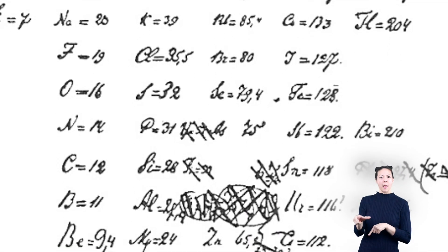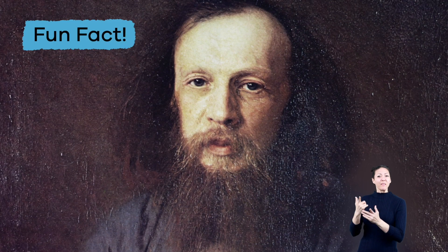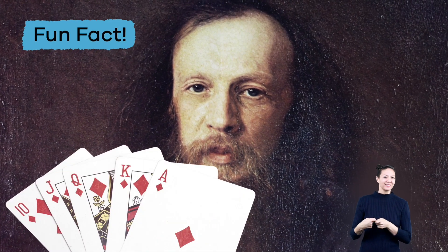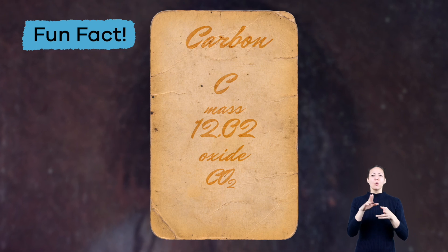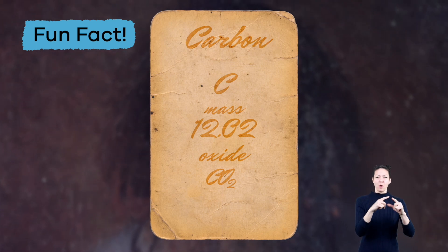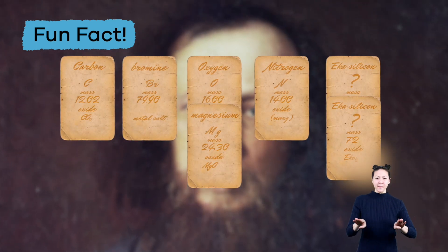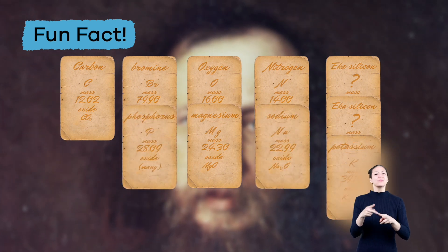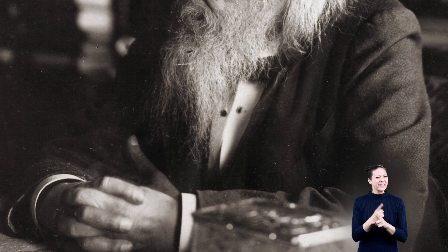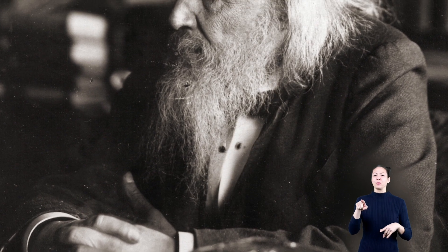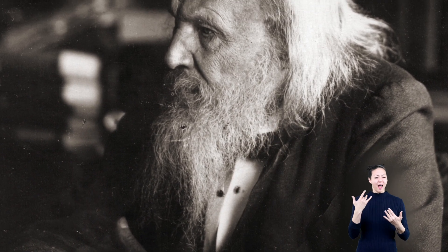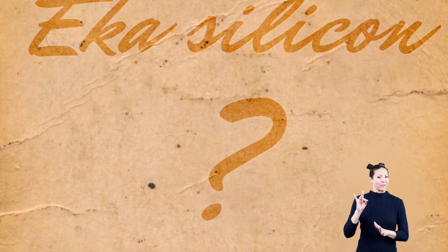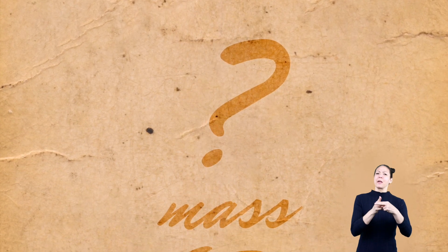Here's a fun fact about Mendeleev: he loved to play cards, so he wrote down the weight of each element on a separate card and then sorted them like they would be organized in solitaire — who says science can't be fun! Mendeleev knew that his table was incomplete because he had left spaces where elements should be but had not been discovered yet. He even named some of these elements and predicted what they would be like.